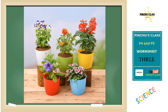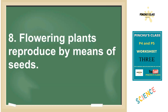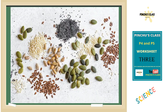Number seven: flowering plants are plants that bear flowers. Number eight: flowering plants reproduce by means of seeds. Most flowering plants reproduce by seeds because the ovules in part of the flower turn into seeds after fertilization.